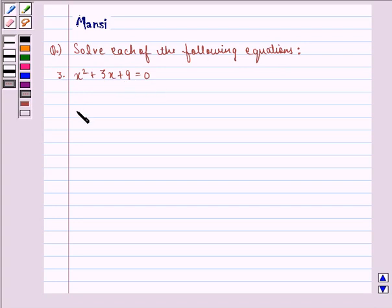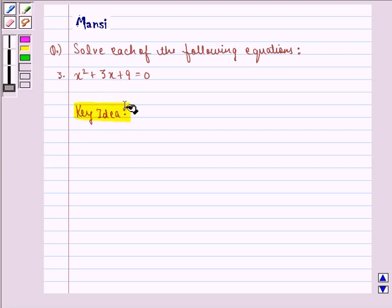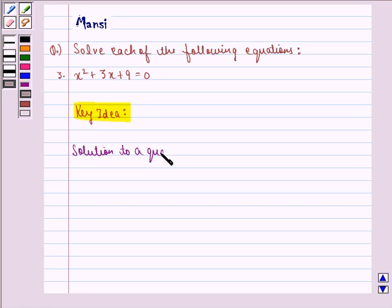Before starting with the solution, we see the key idea behind the question. We see that solution to a quadratic equation ax squared plus bx plus c equal to 0, such that a is not equal to 0...